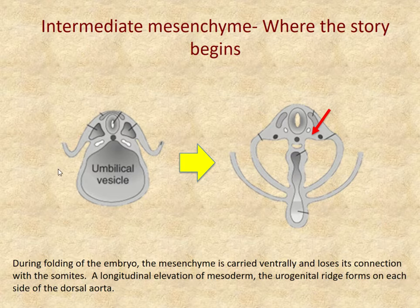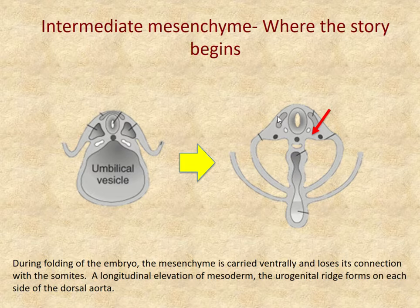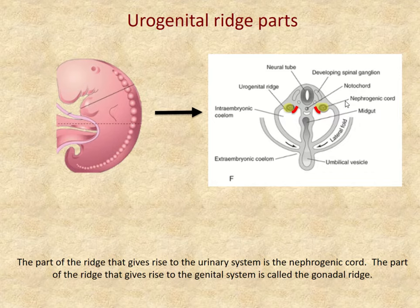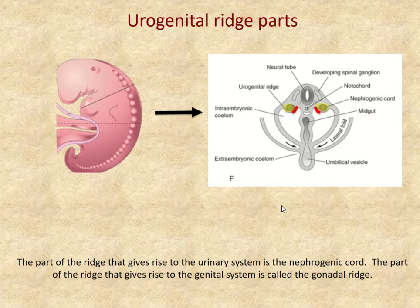When the embryo folds, the mesoderm gets carried ventrally and loses its connection with the somite. This region develops into the urogenital system through condensation of the intermediate mesoderm structures. The urogenital ridge further separates into two parts: in yellow, the nephrogenic cord, where kidneys and associated structures develop, and on the medial side, the gonadal ridge, which will develop into the gonads.